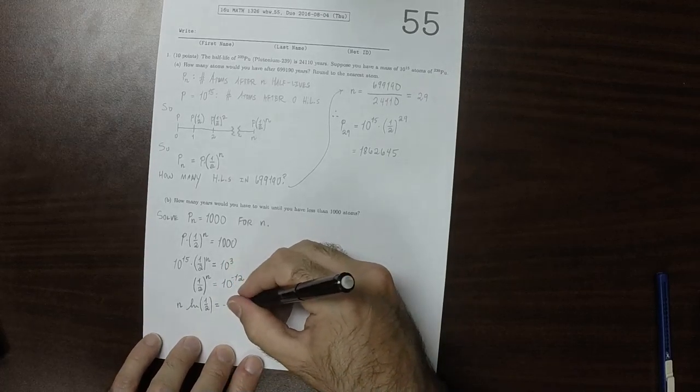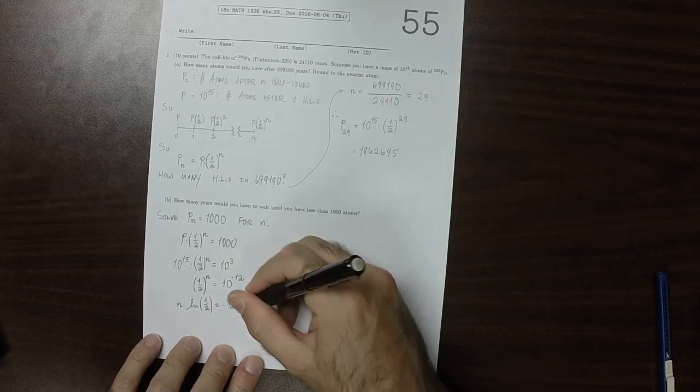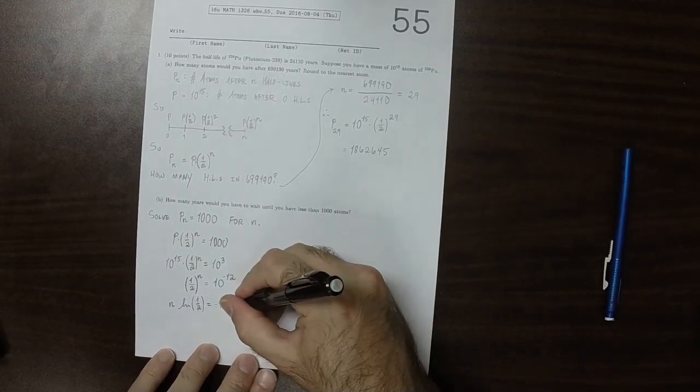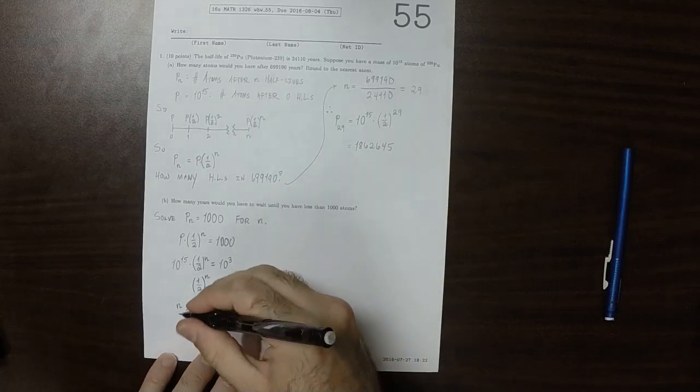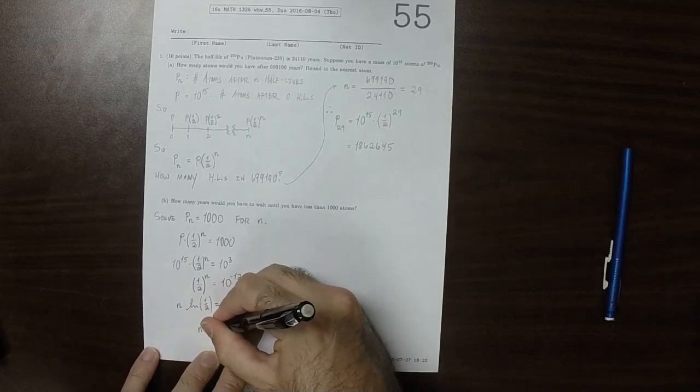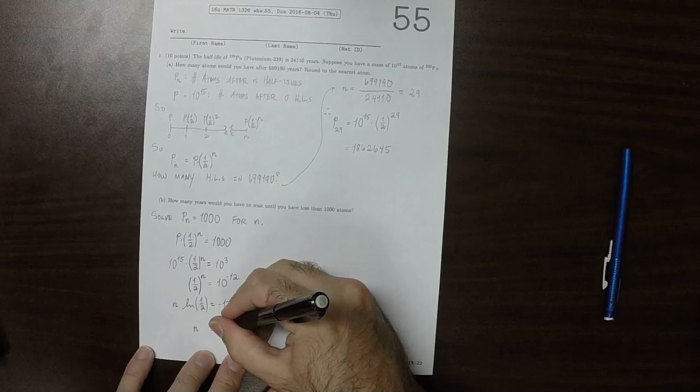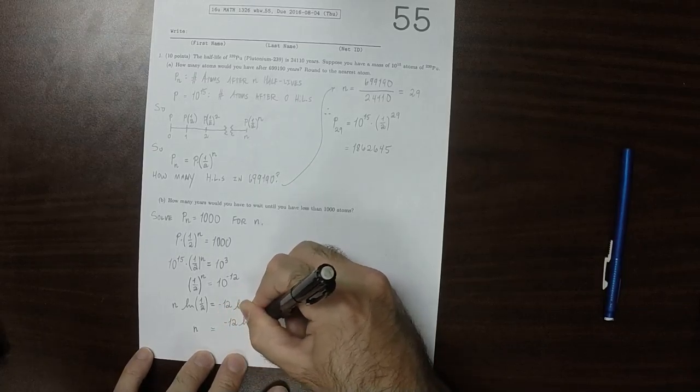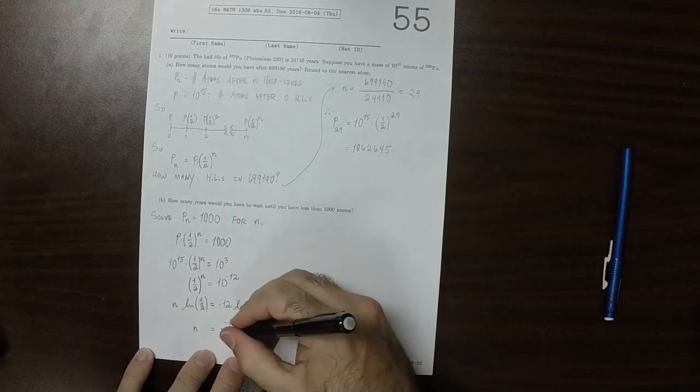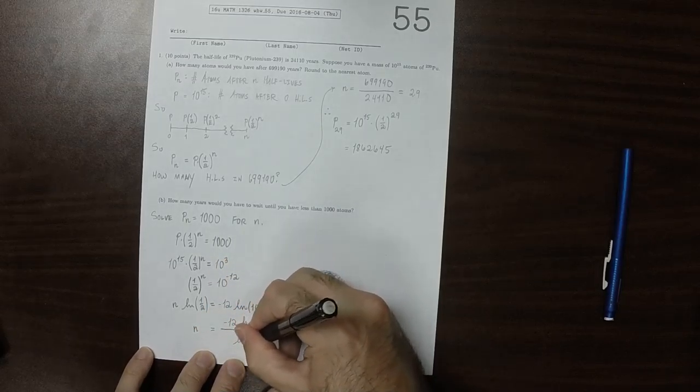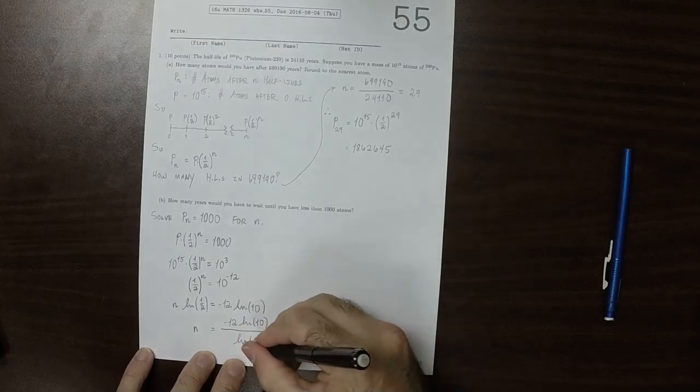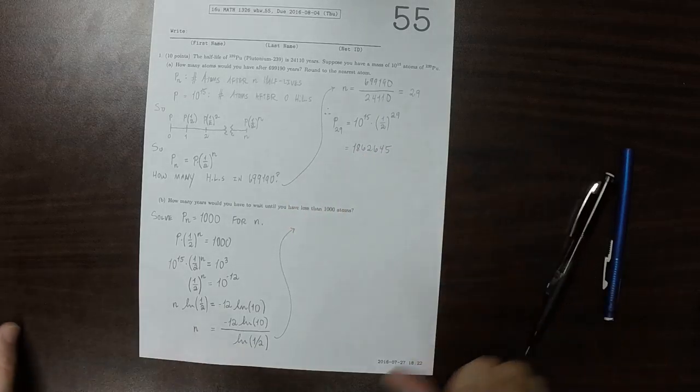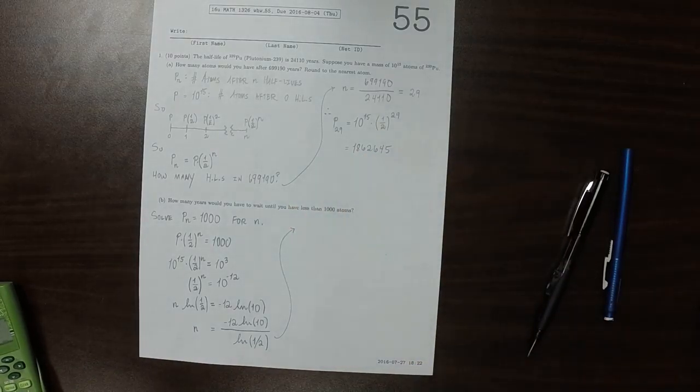Computing the logarithm of both sides, that would be N log(1/2) equals -12 log(10). So N equals -12 log(10) divided by log(1/2).